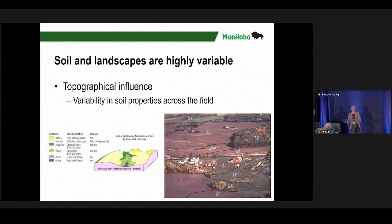Soil is variable for many reasons, but a lot comes down to topography influencing how water has moved over that soil as it developed. This means we end up with different soil properties across the entire field. I grew up north of Saskatoon — a little topography there — but moving to Winnipeg, there's not a lot. Even so, every farmer in the Red River Valley knows where their low spots are, because that's where water ponds. Even slight topography influences soil development and function.